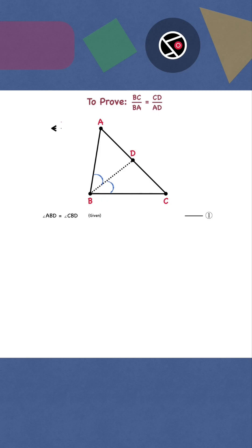Draw SR parallel to BC. Extend BD to intersect SR at F. BF is a transversal to the parallel lines SR and BC.